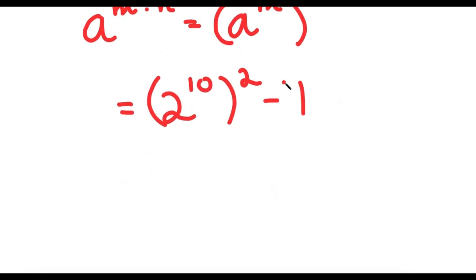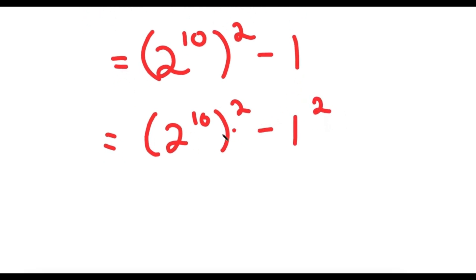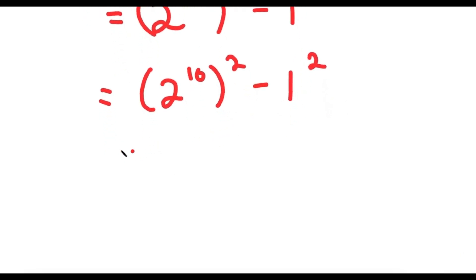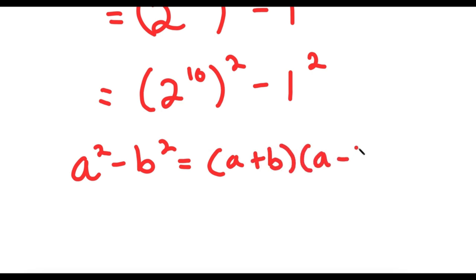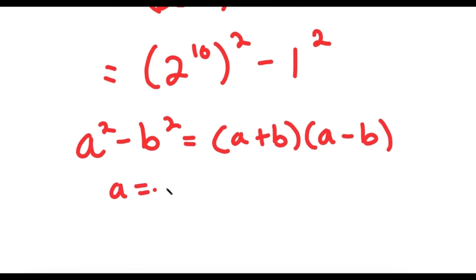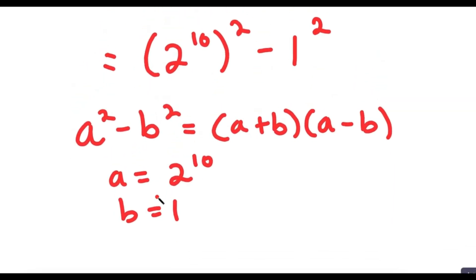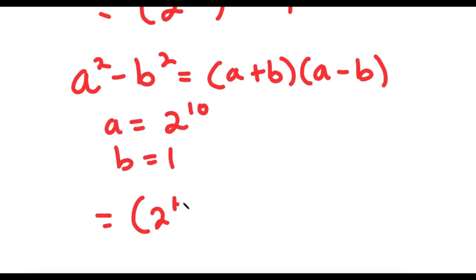Now, I can rewrite 1 as 1 squared, because 1 is the same thing as 1 squared. So now I have 2 to the power of 10, to the power of 2, minus 1 squared. The reason I put this in this form is because now I can use the property a squared minus b squared equals a plus b times a minus b. So in this case, a is equal to 2 to the power of 10 and b is equal to 1. So now I get 2 to the power of 10 plus 1, times 2 to the power of 10 minus 1.